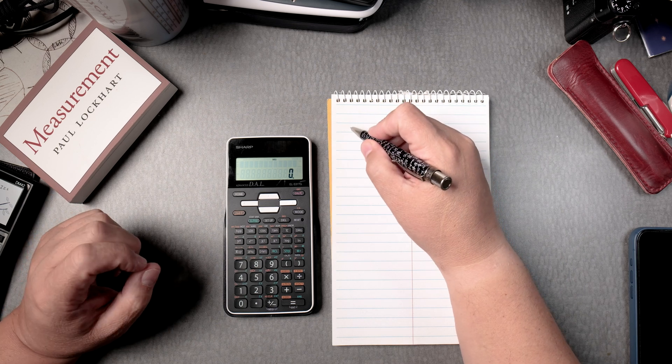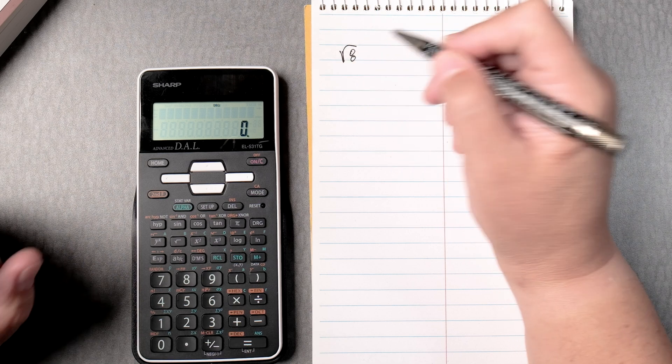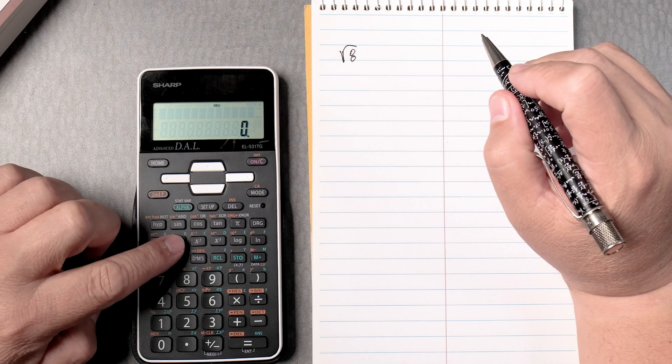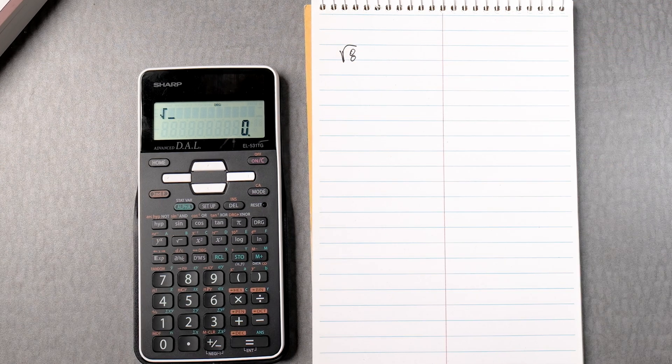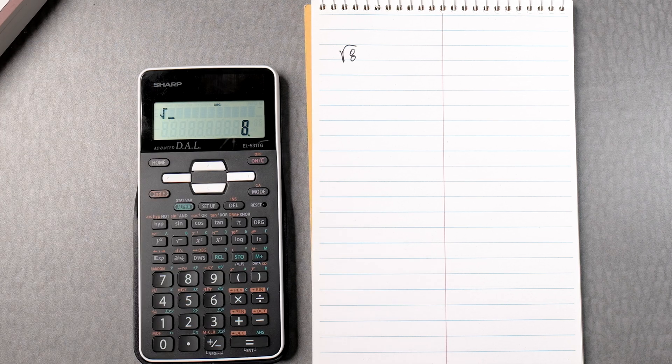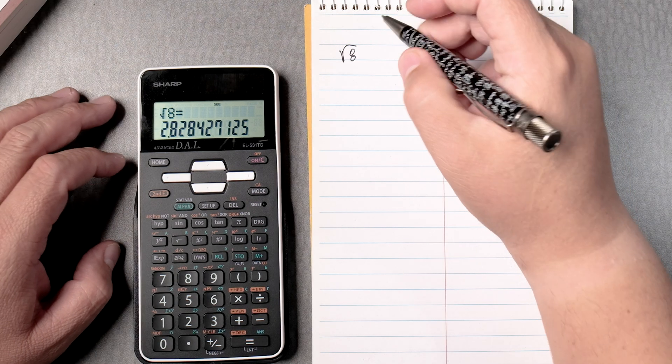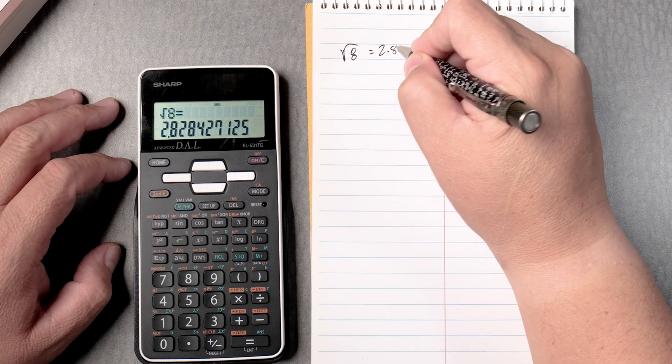Let's say we want to take the square root of 8. We press the square root button and then we press 8. As you can see, the 8 doesn't go in that slot there. We press equals and then it gives us 2.82.